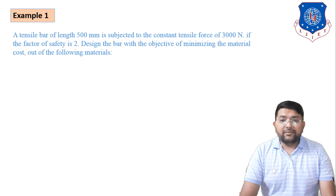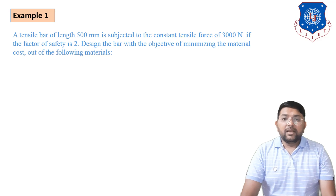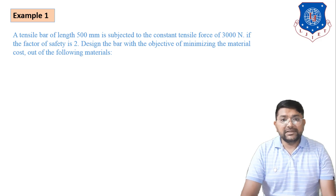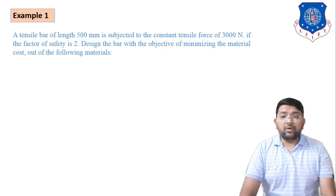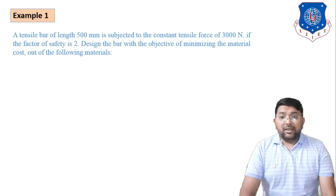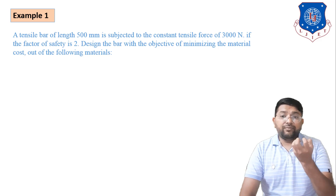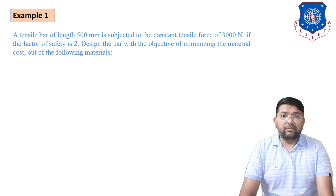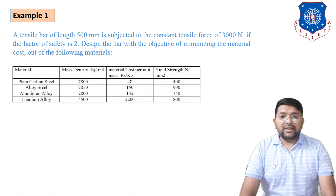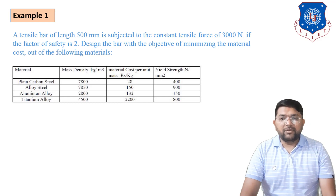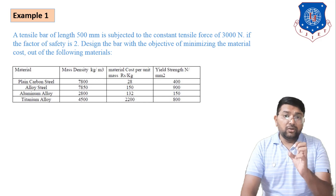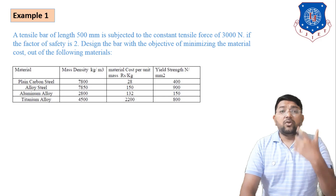Example number one: a tensile bar of length 500 mm is subjected to a constant tensile force of 3000 newton. The failure force is given as 3000 newton. The factor of safety nf is two. Design the bar with the objective of minimizing the material cost out of the following materials. In the tensile bar we have to minimize cost using the below materials. There are four types of material: plain carbon steel, alloy steel, aluminum alloy, and titanium alloy.